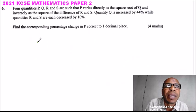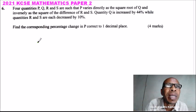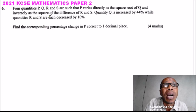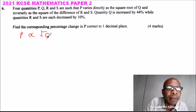2021 KCSE mathematics paper two, number six. Four quantities P, Q, R and S are such that P varies directly as the square root of Q. We can write that P varies directly as √Q.